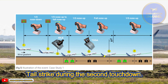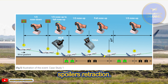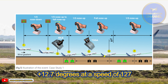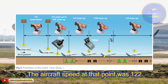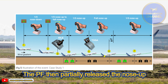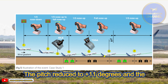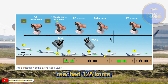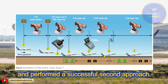Tail strike during the second touchdown. The aircraft touched down a second time during engine spool-up and ground spoiler retraction. A tail strike occurred at a pitch of plus 12.7 degrees at a speed of 127 knots, V-app minus 10 knots. The PF maintained full nose-up input for one more second. Aircraft speed was then 122 knots, V-app minus 15 knots. The PF then partially released to one-third nose-up input; pitch reduced to plus 11 degrees and the aircraft achieved liftoff at 128 knots. The PF continued the go-around and performed a successful second approach.